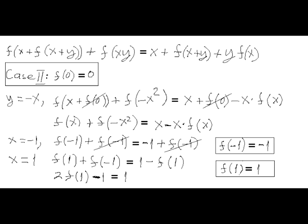The second case, when the graph of function f of x goes through the origin of coordinates. If we plug in any pair of real numbers x and y, such that y equals minus x, then the original functional equation is transformed into the more simple functional equation.